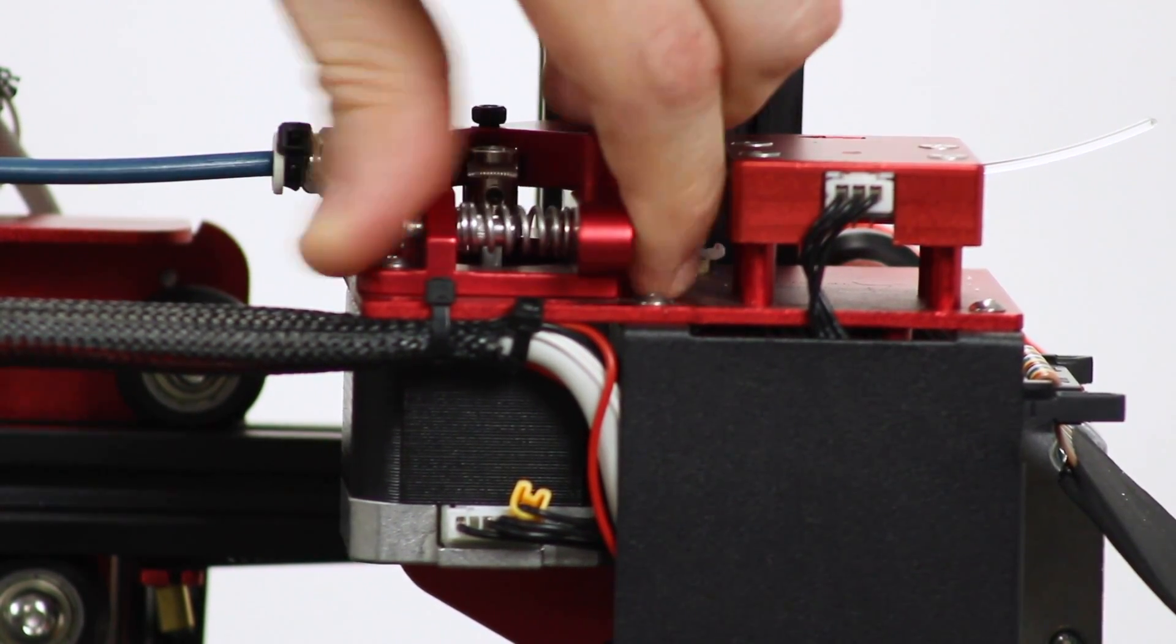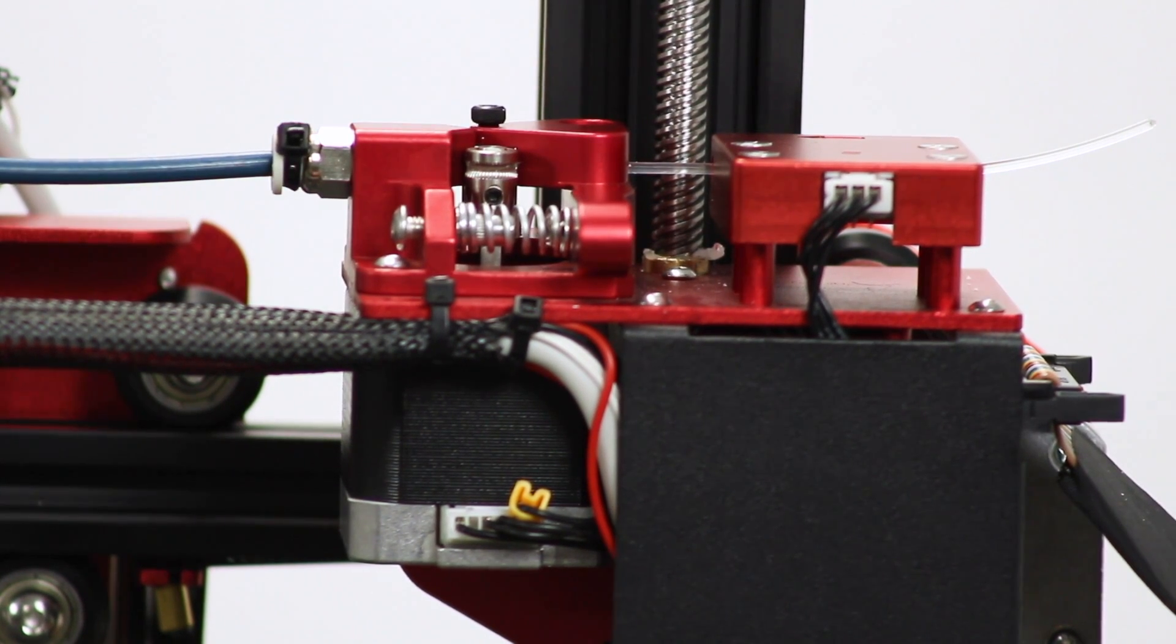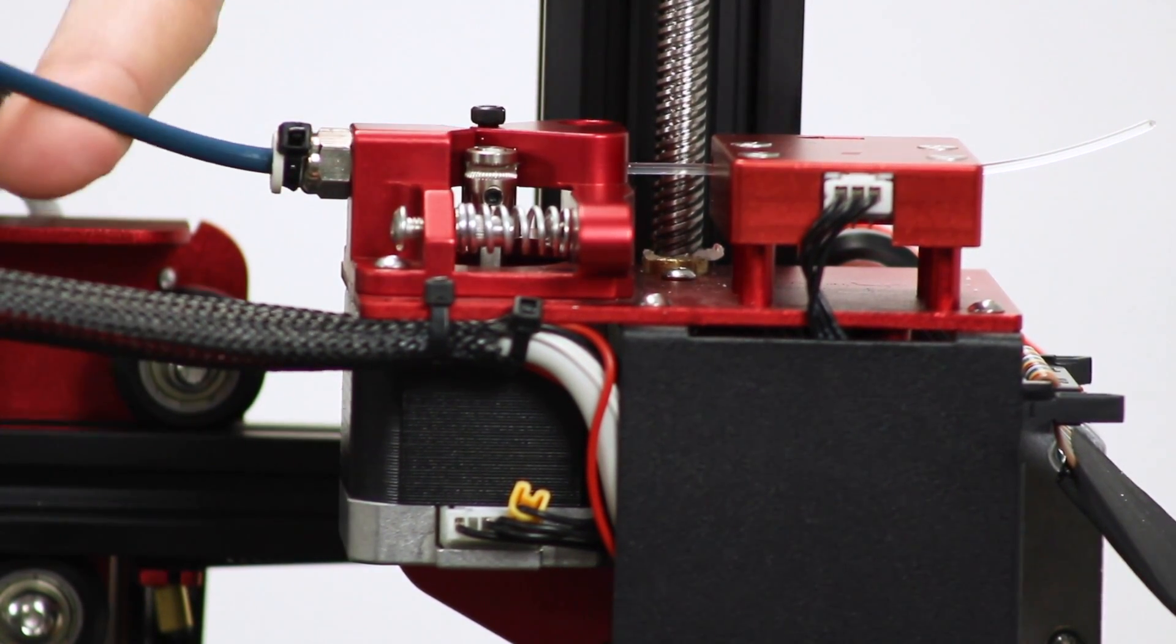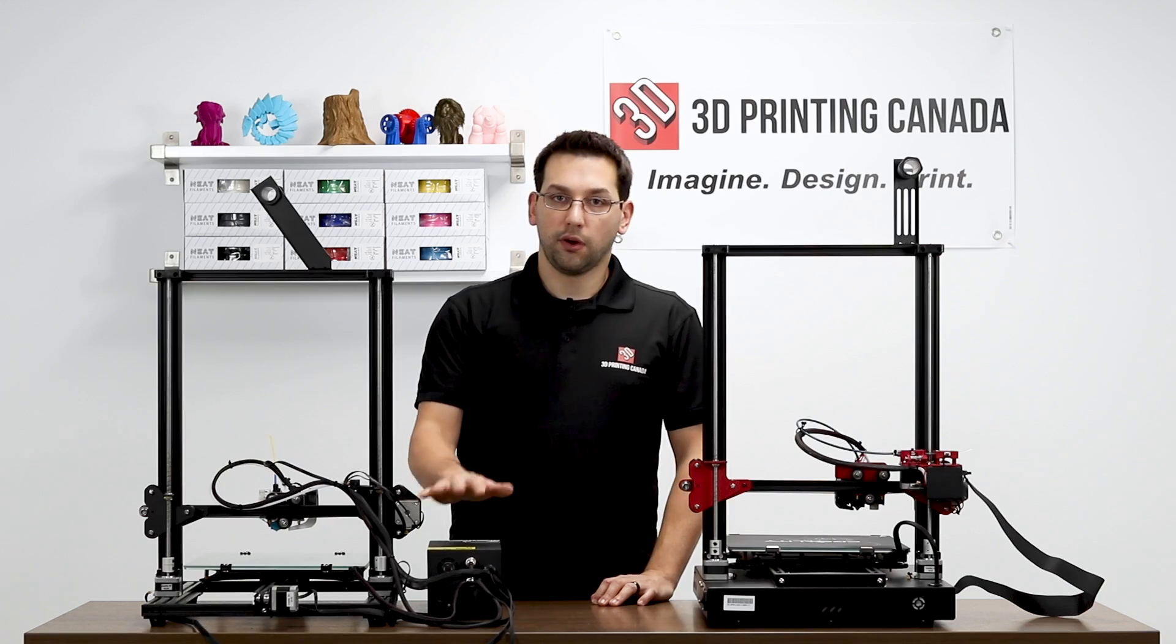But it's preloaded pretty well from the factory. And then of course, it goes into the Capricorn tube from there. So on to the back of the printer.